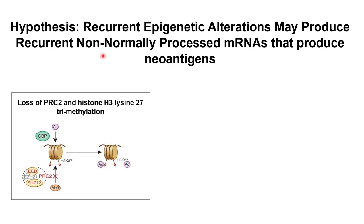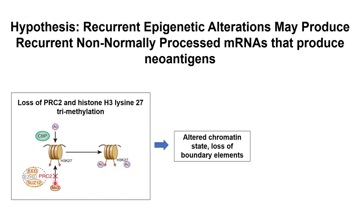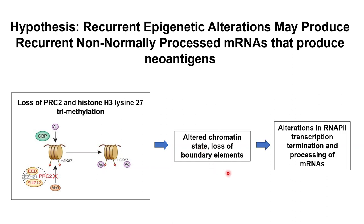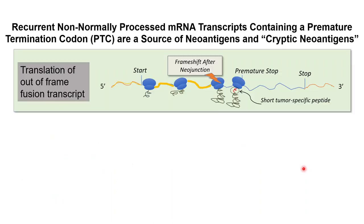The hypothesis is that there are non-normal epigenetic alterations that ultimately produce non-normal mRNAs, which are then translated into peptides presented as neoantigens to the immune system. Due to genetic alterations, we see epigenetic changes that lead to altered chromatin state, loss of regulation, and ultimately the expression of these non-normally processed RNA sequences.